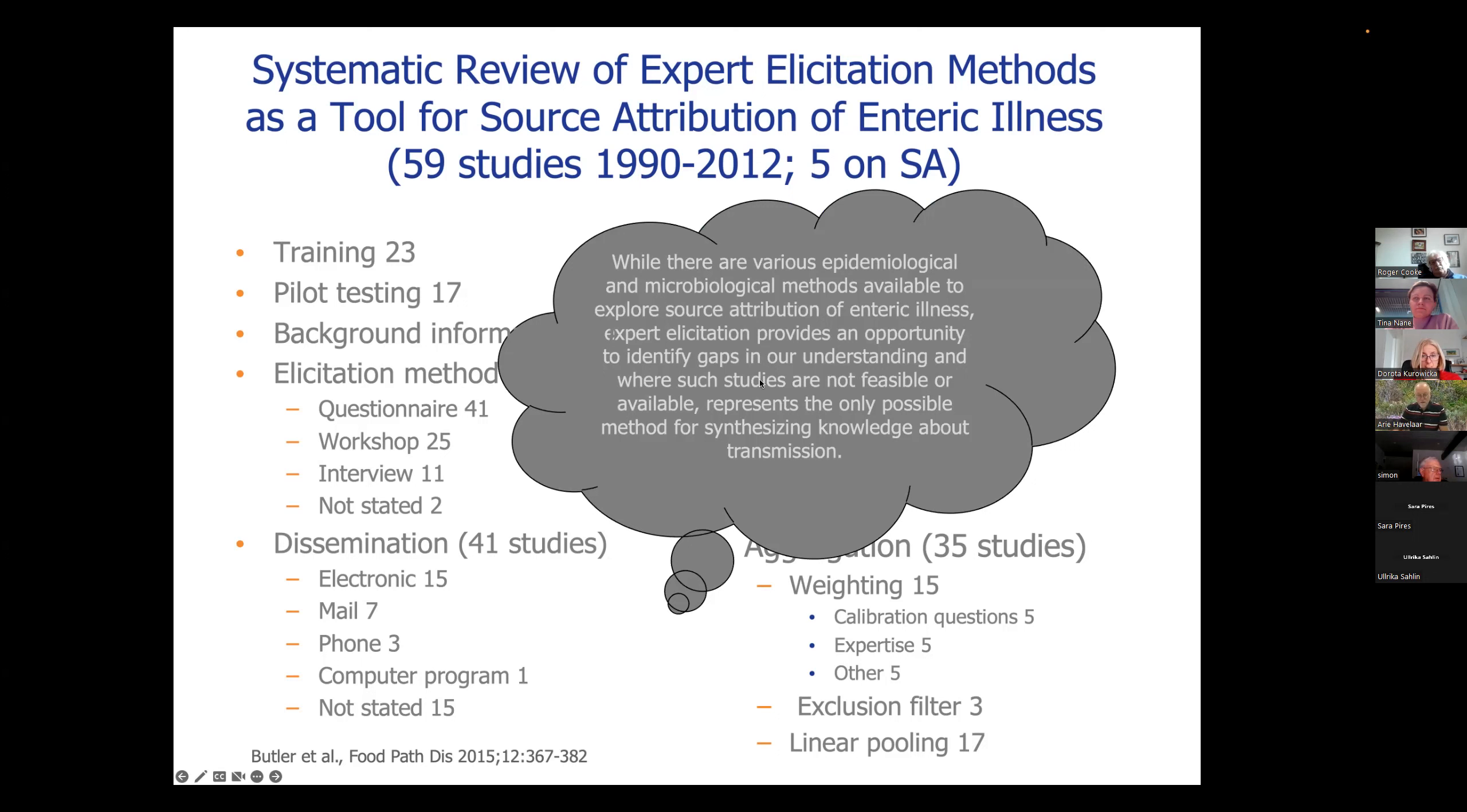So one of the reviews that, again, these authors made is that while there are various epidemiological and microbiological methods available to explore sources of attribution of enteric illness, expert elicitation provides an opportunity to identify gaps in our understanding. And where such studies are not feasible or available, represent the only possible method for synthesizing knowledge about the transmission. So again, the message is, apart from the few data that we directly have on disease transmission, there's a lot of other data out there, qualitative data, sometimes on the ecology, what kind of products can these bacteria grow in, survive in, what do we know about numbers? So all kinds of information that we would like to include in an algorithm, but simply don't have the algorithm yet.